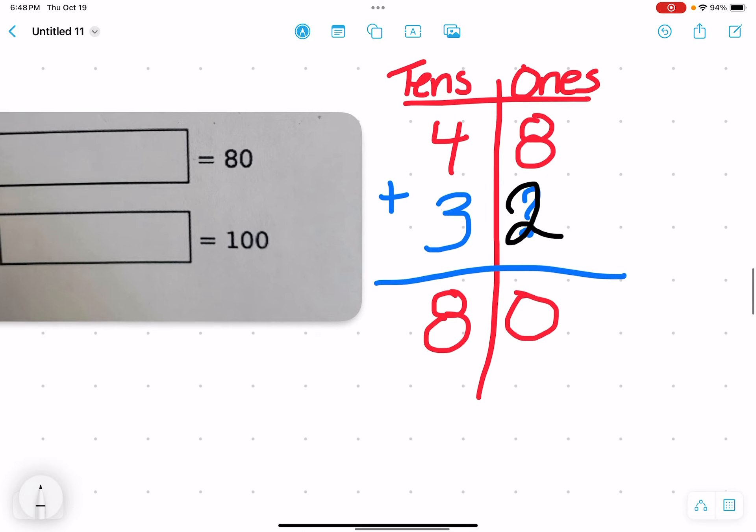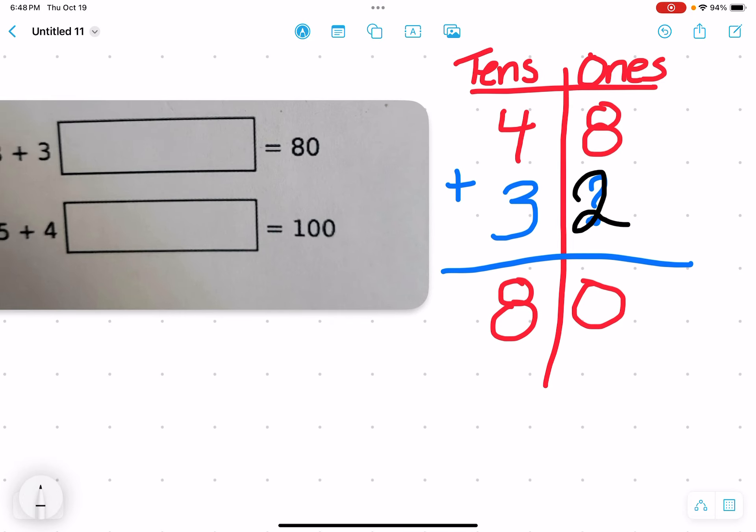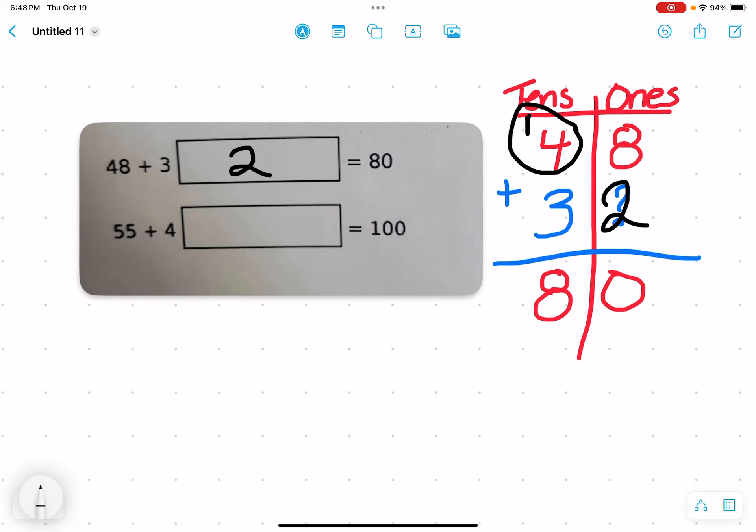Let's test it out. Now, 8 plus 2 is 10. So the 0 is in the ones place, and your new 10 is in the tens spot. When I circle 1 plus 4, I got 5, and 5 plus 3 is 8, making our missing digit 2 in this equation.